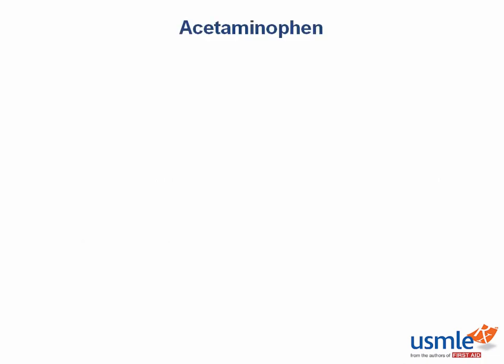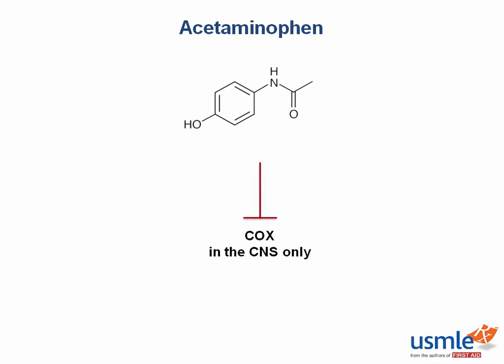Another commonly used drug for analgesia and antipyresis is acetaminophen. How does acetaminophen work? It reversibly inhibits COX in the CNS and not peripherally, where it's made inactive. Therefore, since it can't get to the sites of inflammation directly to block the enzyme, it has no anti-inflammatory effects and is not technically an NSAID.